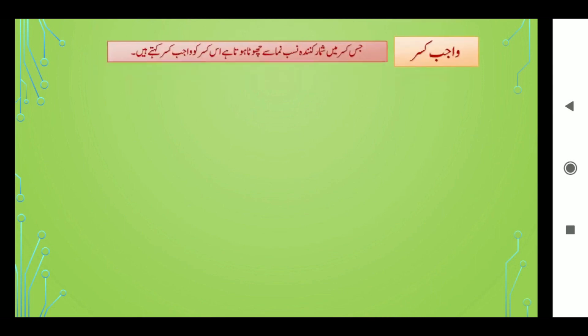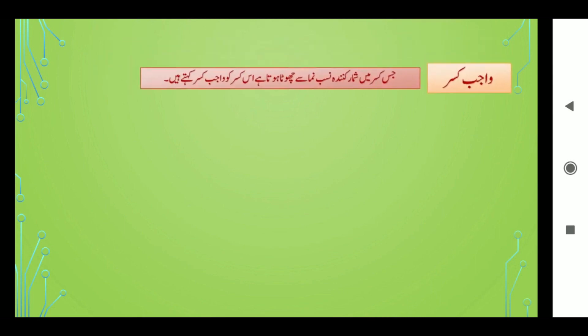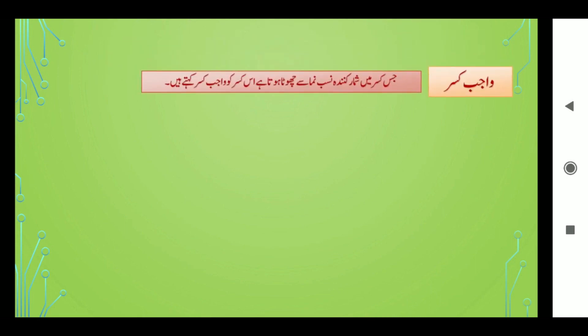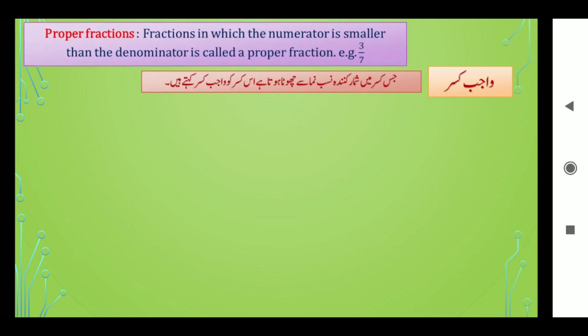سب سے پہلے دیکھیں گے واجب قصر۔ جس قصر میں شمار قرندہ نصف نماز سے چھوٹا ہوتا ہے اس قصر کو واجب قصر کہتے ہیں۔ Proper fraction: a fraction in which the numerator is smaller than the denominator is called a proper fraction.